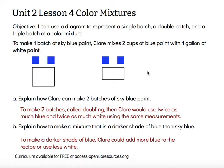The objective says I can use a diagram to represent a single batch, a double batch, and a triple batch of a color mixture. So we looked at the single batch and the double batch, but you can imagine what a triple batch would look like — just using three times as much. So three groups of two, three groups of one, for our blue paint and our white paint. Thanks for watching!